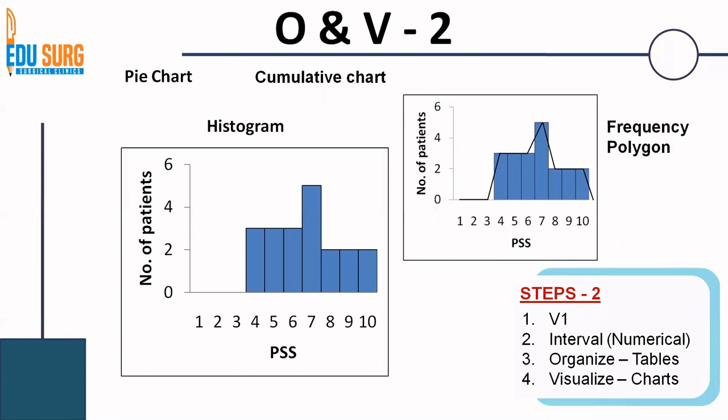Another way of depicting or visualizing interval or numerical data is a frequency polygon. What this does is it connects the center points of each and every bar. The black line is showing the frequency polygon. These are two new ways of organizing interval or numerical data.